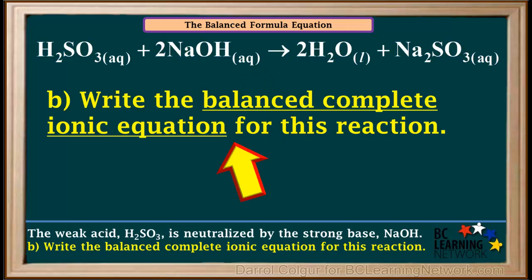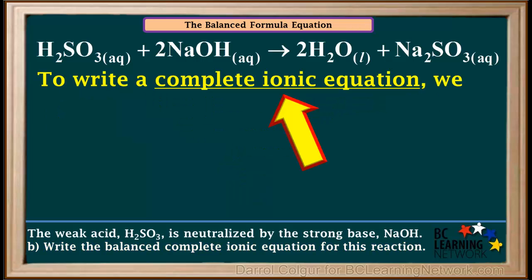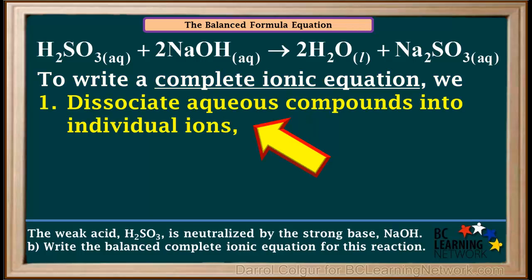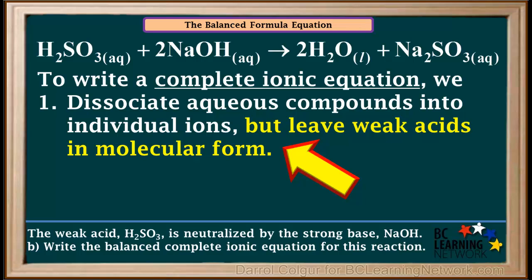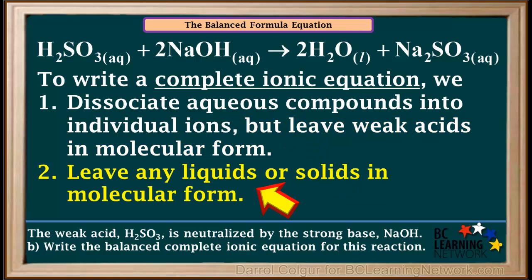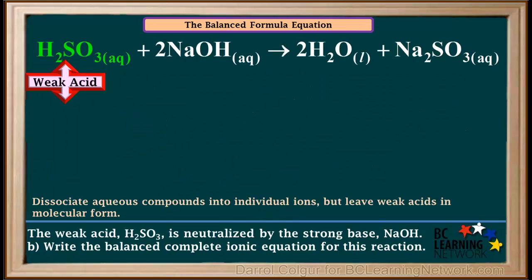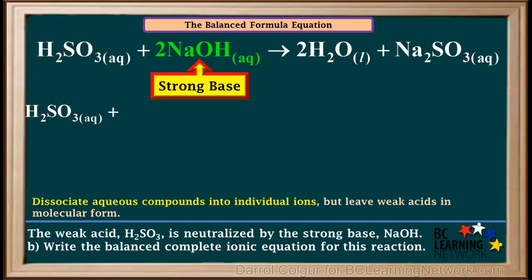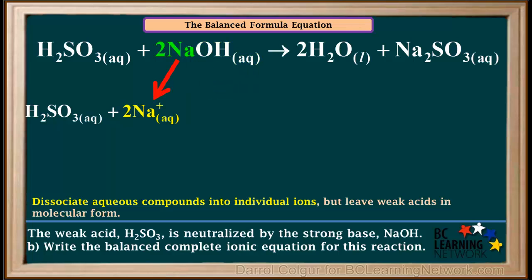The B part of this question asks us to write the balanced complete ionic equation for this reaction. In order to write a complete ionic equation, we normally dissociate aqueous compounds into individual ions. But weak acids exist mainly in molecular form and dissociate into free ions only to a very small extent. Therefore, in our complete ionic equation, we leave weak acids in molecular form. We also leave any solids or liquids in molecular form. We'll start with H2SO3 — because it's a weak acid and exists mainly in molecular form, we leave it as a molecule. Because NaOH is a strong base, it completely dissociates, so we write 2 Na+ aqueous and 2 OH− aqueous.